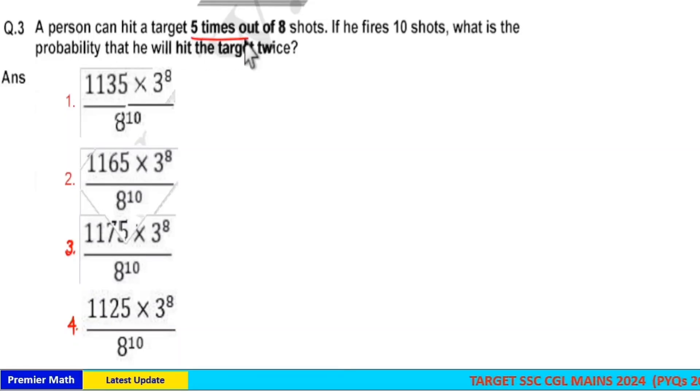A person can hit the target 5 times out of 8 shots. If he fires 10 shots, what is the probability that he will hit the target twice?